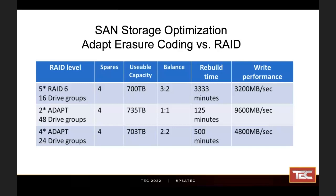When you look at that, that's a pretty large increase not only in the write performance, but a large decrease in the recovery time that you can get. It's because you're increasing the number of drives that participate in that particular erasure-coded environment — as opposed to 12 drives, you're using 48 drives. By doing that, the IO capacity is going to increase dramatically.